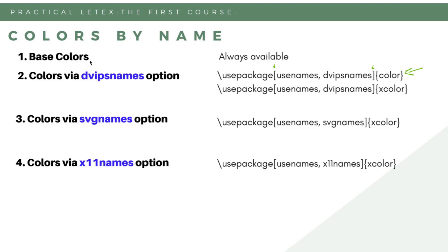Then there are colors available if we use the option 'dvipsnames' — using the command \usepackage[dvipsnames]{color}. With this option we get access to a lot more named colors beyond the base 19.